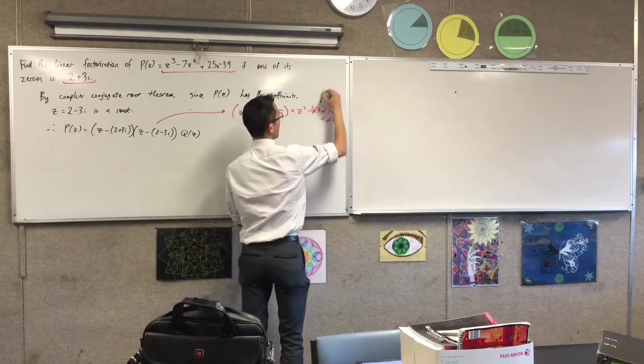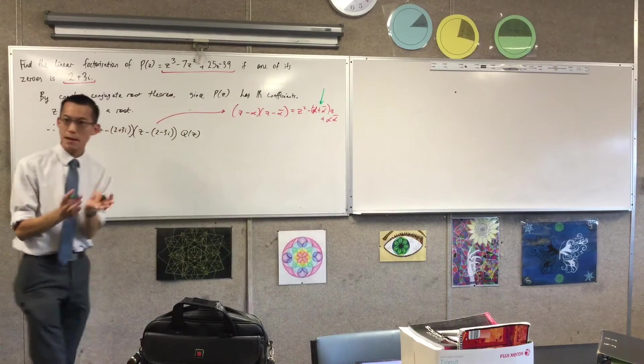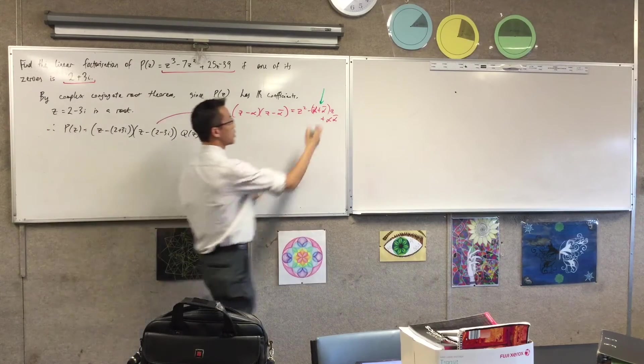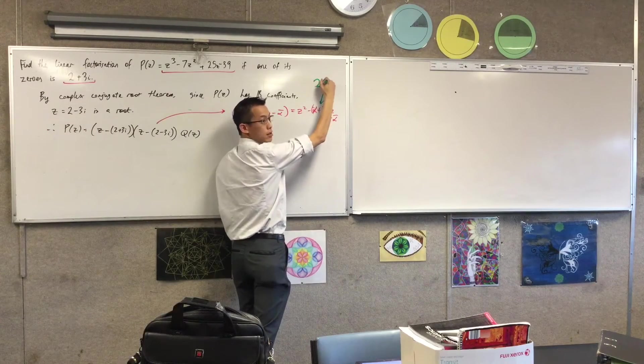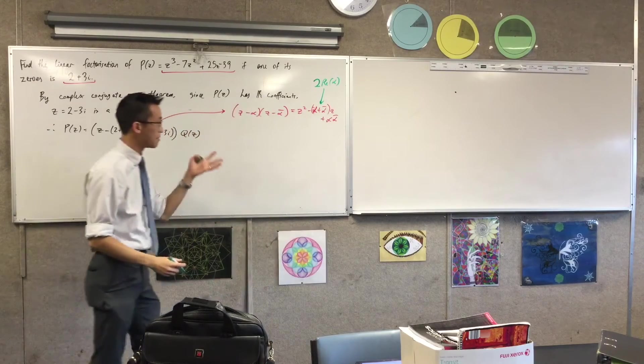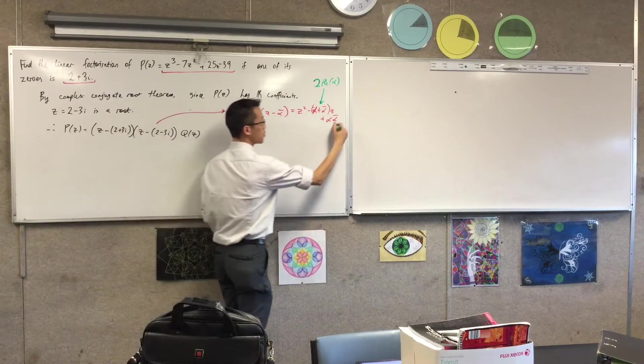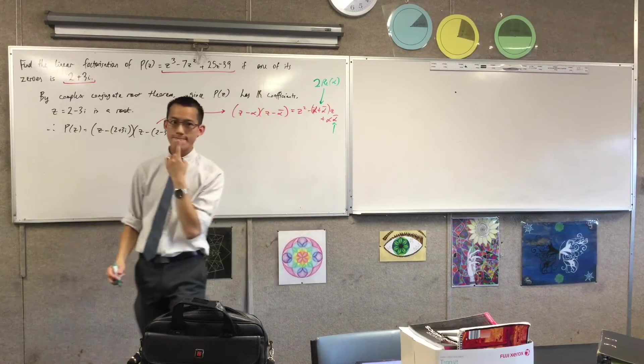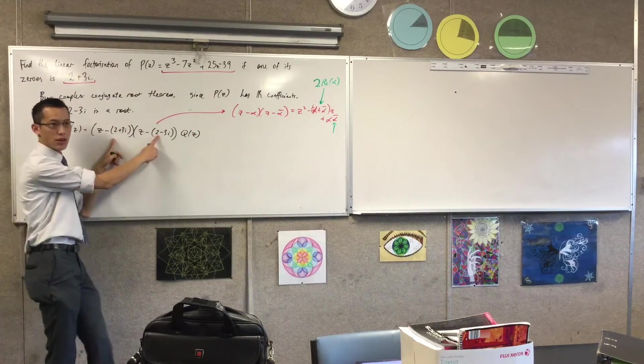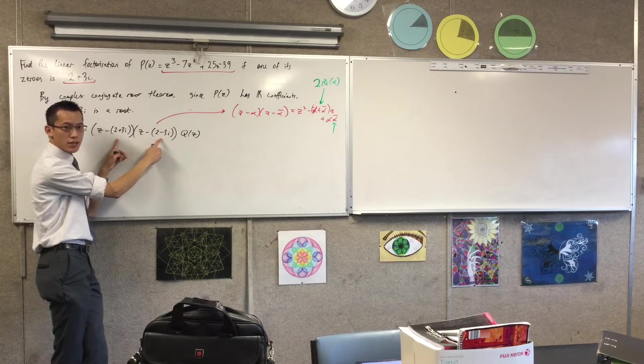When you add them together, the imaginary parts are going to disappear or cancel out. So in fact all you're going to get is two lots of the real part of alpha. Do you agree with that? The imaginary part disappears. What happens when we multiply them?